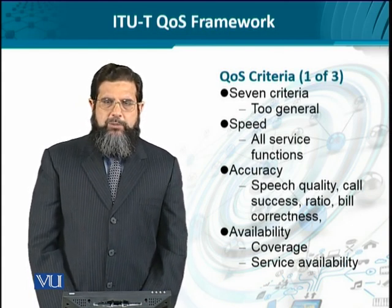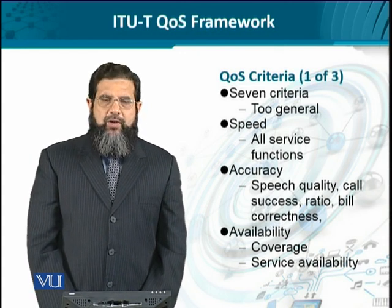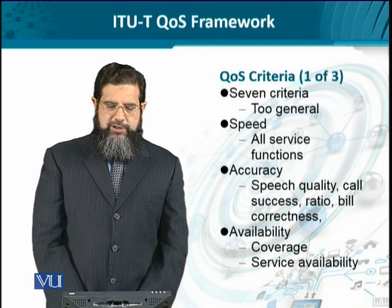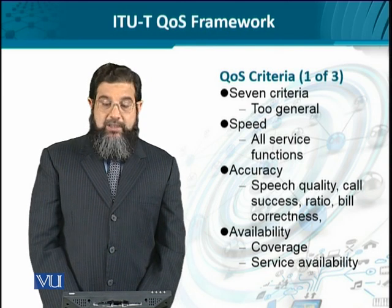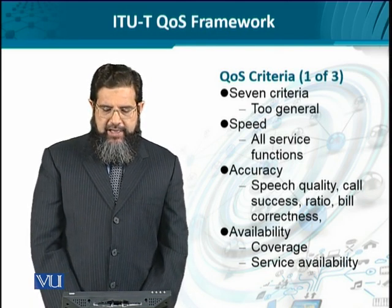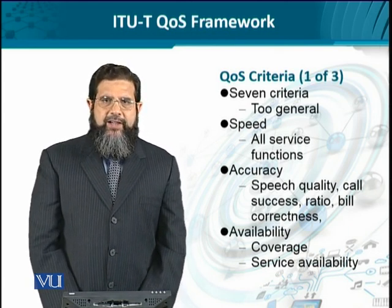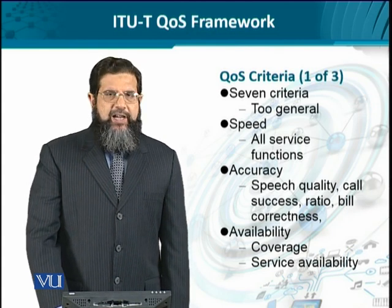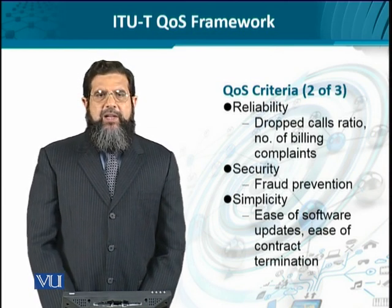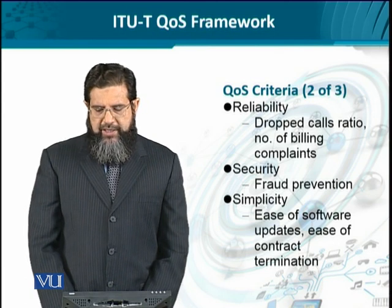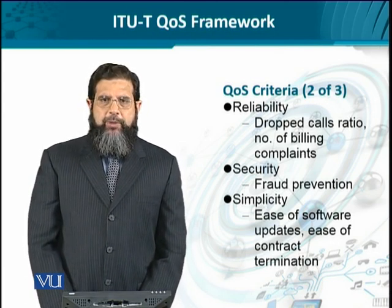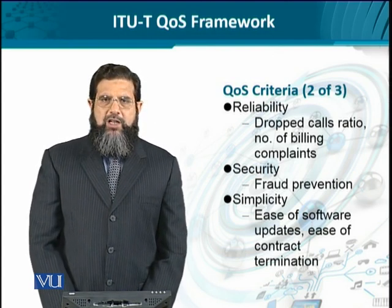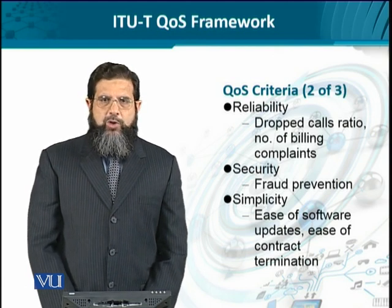In terms of availability, for instance, the coverage of a certain service provider in terms of geographical area — service availability as such is also a QoS concern, because a service may be available very effectively in one service provider's jurisdiction but not in another. Then we have reliability, which is basically the trustworthiness of the network: how many calls it drops, how many calls it makes, and the overall stringent billing requirements. If customers are complaining of over-billing, then it means it's not a very reliable service provider.